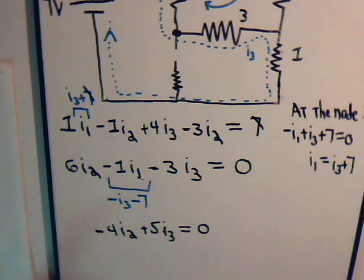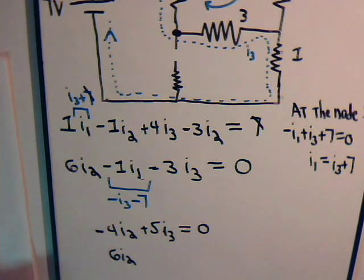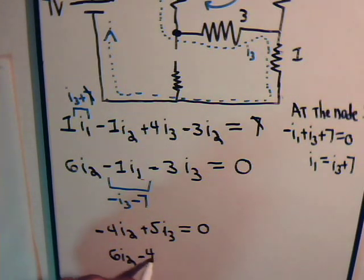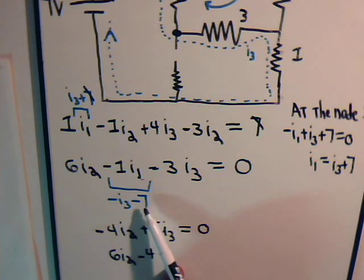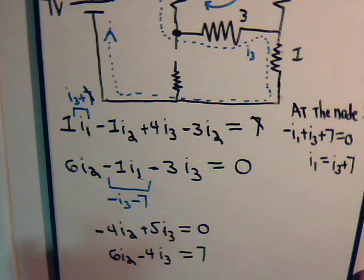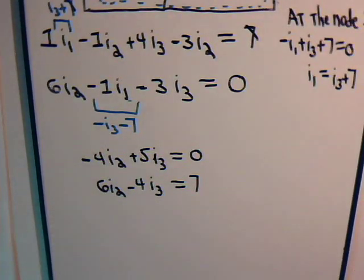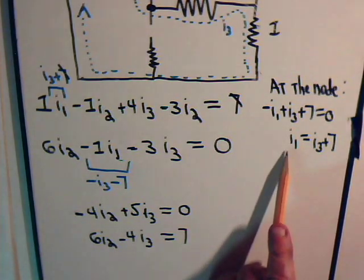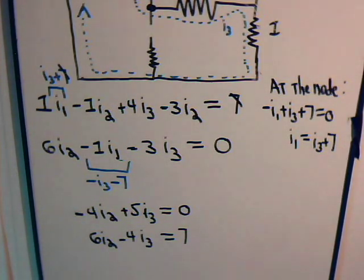For the second equation, we have 6 times I2. Then minus I3 minus 3 I3, which is minus 4 times I3. And here we have minus 7 brought over to this side giving plus 7 on the right. So now we're well set up because we have two equations and two unknowns: I2 and I3. We can solve for each of them, and as soon as we determine the value of I3, we will know I1. The procedure is the same as used in previous videos.